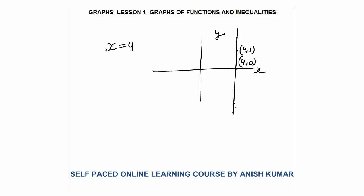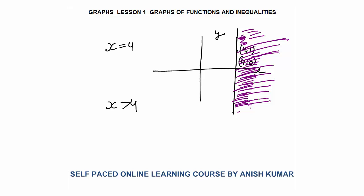The value of x is always 4, whatever be the value of y — y could be 0, 1, 2, 0.1, 0.2, 0.3, but x remains 4. Now, if I want to draw the graph of x greater than 4, this entire region to the right of the line, continuing to infinity, will be the area where x is greater than 4. So x equals 4 is a straight line, and x greater than 4 is the entire area on the right side of that line.